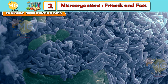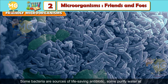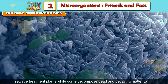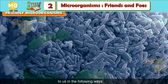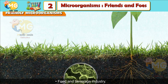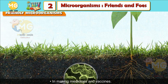Friendly microorganisms: Some bacteria are sources of life-saving antibiotics. Some purify water at sewage treatment plants, while some decompose dead and decaying matter to produce humus, which provides nutrients to plants. Microorganisms are useful to us in the following ways: in the food and beverage industry, in agriculture, in cleaning the environment, and in making medicines and vaccines.